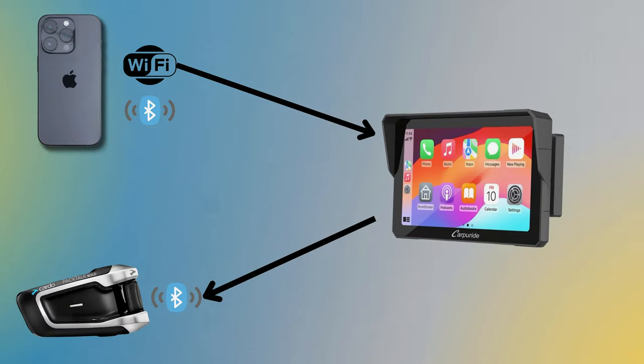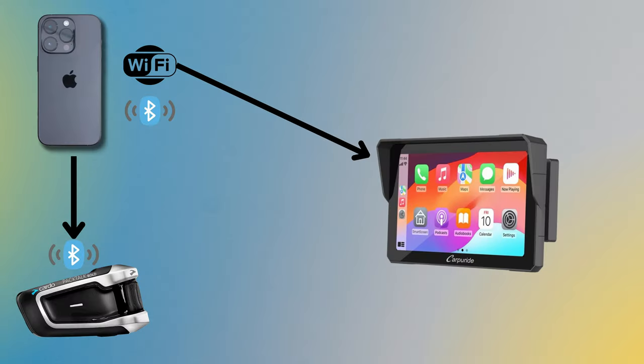I'm going to put a diagram up now which illustrates the typical way in which most companies want you to pair everything. A Bluetooth link is established from the phone to the unit, which then switches over to Apple CarPlay via a Wi-Fi link, and then they want you to pair your headset to the unit. The issues I've had have been poor audio — almost like it's buffering. However, there is a way to leave your headset paired directly to your phone and just have your phone paired to your CarPlay unit.